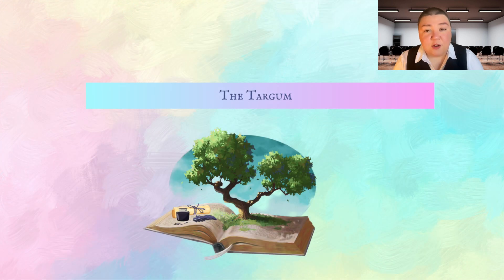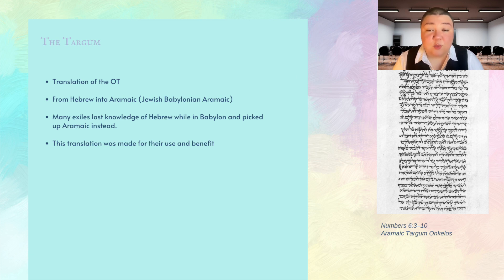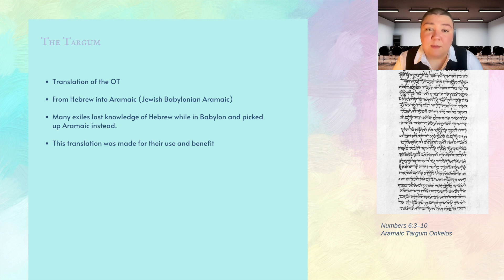Another translation of the Old Testament was called the Targum. The Targum was translated from Hebrew not into Greek, but into Aramaic. As mentioned, many exiles lost knowledge of Hebrew while in Babylon and picked up Aramaic instead, so the translation was made for their use and benefit.